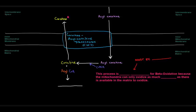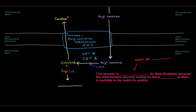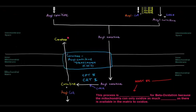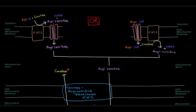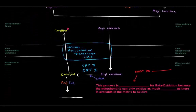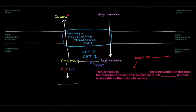The reaction regenerating acyl-CoA in the matrix is catalyzed by CAT2 — carnitine acyl transferase 2, also called CPT2. Now that we've regenerated acyl-CoA on the mitochondrial matrix side, it can undergo beta-oxidation. We've effectively carried the acyl group from the cytoplasm, across the outer mitochondrial membrane, and into the mitochondrial matrix.